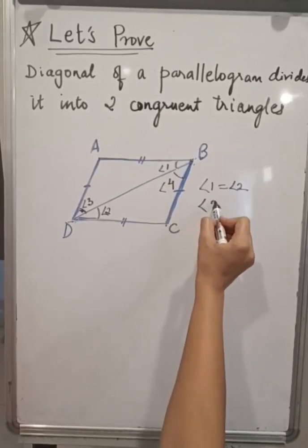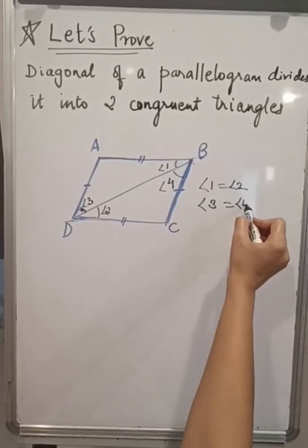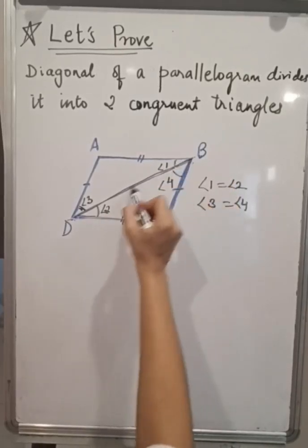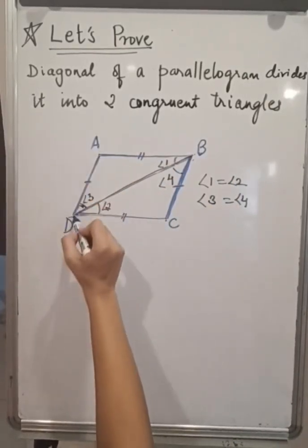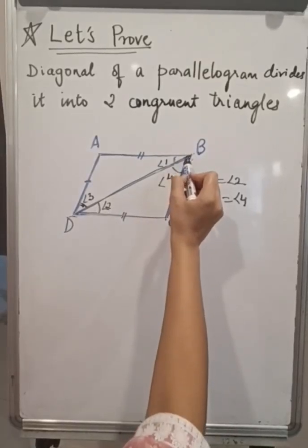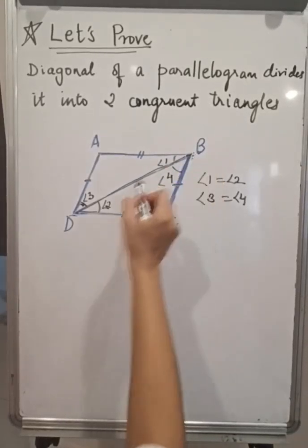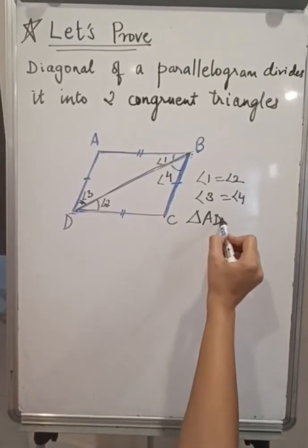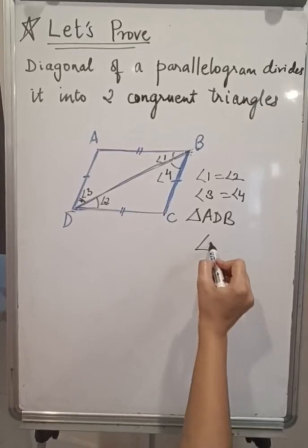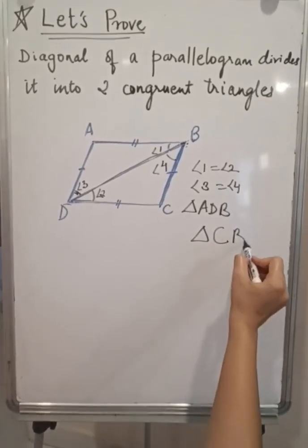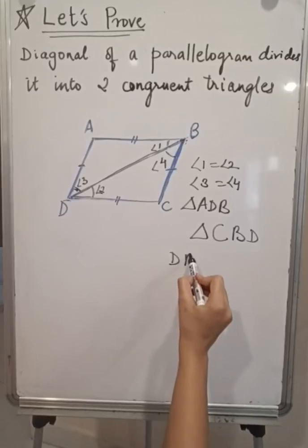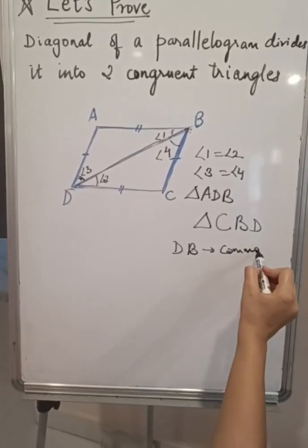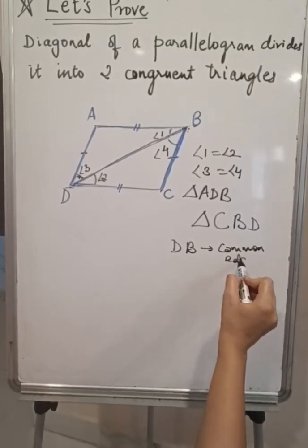DB is a common line between triangle ADB and triangle CBD. Let me write triangle ADB and triangle CBD. DB is common line or we can say common edge of these two triangles.